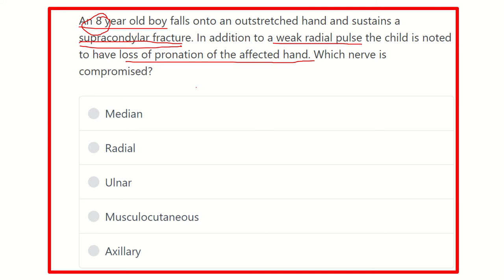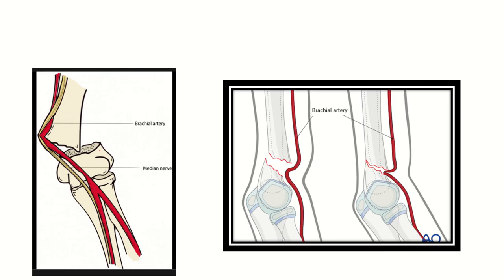In addition, with the weak radial pulse, that means proximal to the radial artery there will be compromise of blood supply or compression of the blood vessel. And last of all, loss of pronation of the affected limb. In this picture we can see the elbow joint, and above the elbow joint is the supracondylar region, where we can see the fracture.